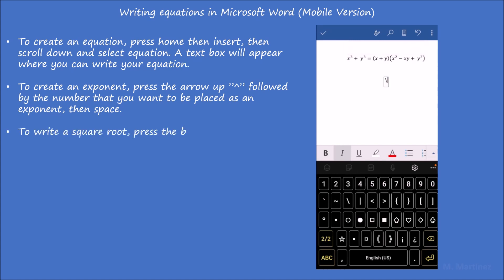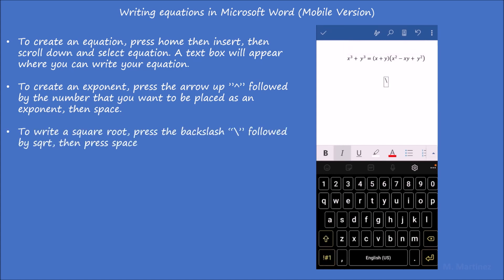To write a square root, press the backslash, followed by sqrt, then press space and the square root sign will appear.